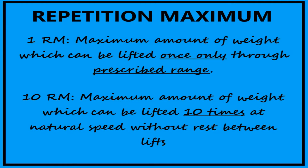Now what is repetition maximum? 1RM is the maximum amount of weight that can be lifted once only through the prescribed range against gravity. So 1RM is different for different persons, hence there is a need to calculate 1RM before prescribing the exercises.